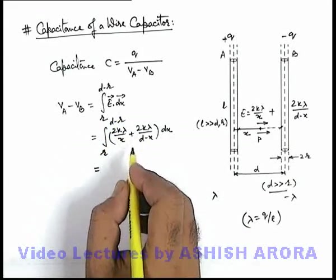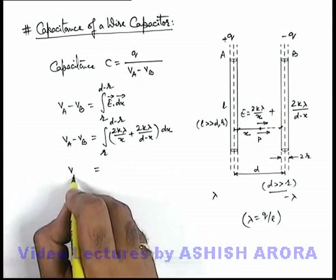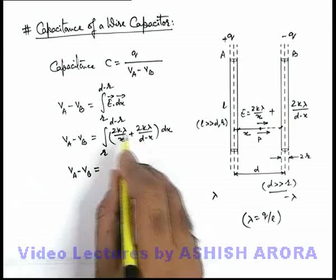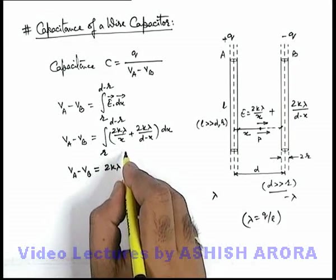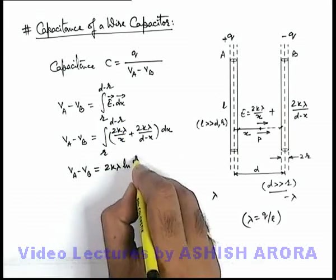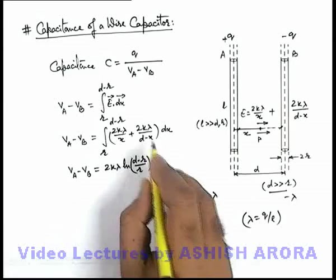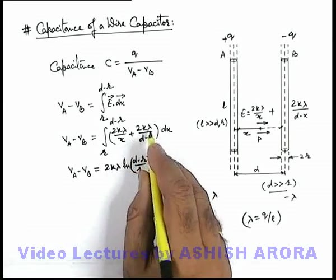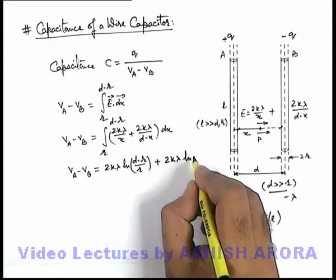On integrating this result we'll be getting this: V_A minus V_B is equal to, this will be integrated 2k lambda ln x, and if we substitute the limit from r to d minus r, it'll be ln of d minus r by r, plus on integrating 2k lambda by d minus x it'll be 2k lambda ln of.